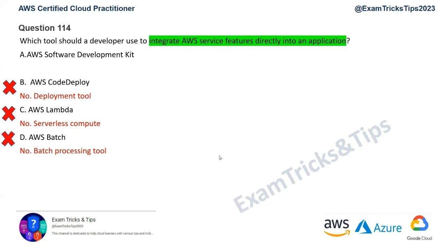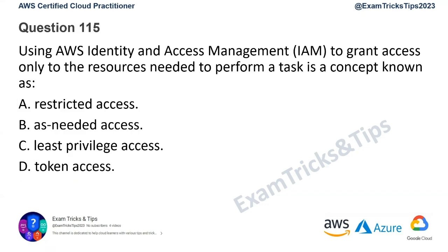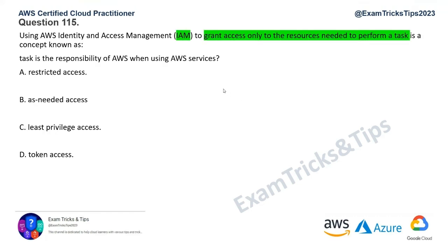Option A, AWS SDK, is the correct answer for question 114. Question 115: using AWS Identity and Access Management to grant access only to resources needed to perform a task is a concept known as least privileged access. In any operational scenario, you don't want to give any access more than what is necessary — give only what is needed, and do not go above and beyond.